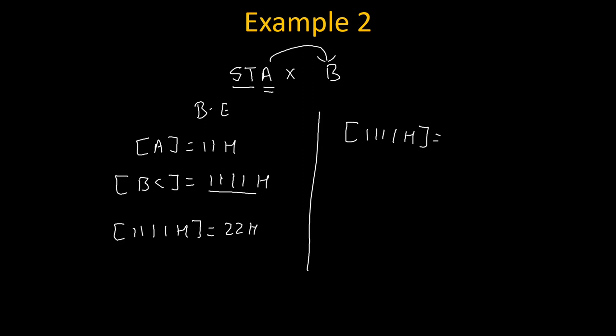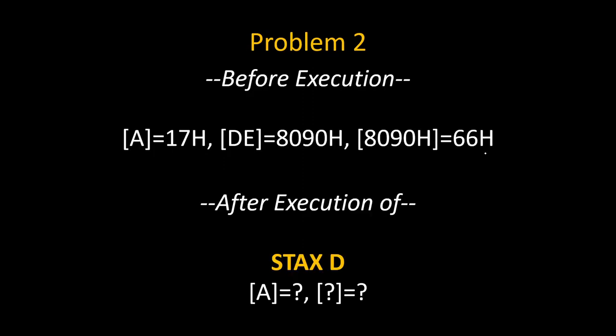Here are some practice problems. Problem number one: instruction is STAX B, accumulator is holding 22h, BC is holding 5020h, and on location 5020h data is 35h — what will happen after this instruction? Problem number two: instruction is STAX D, content of accumulator is 17h, content of DE is 8090h, and on 8090h data is 66h — what will happen because of this instruction? Write your answers in the comments. Thank you.